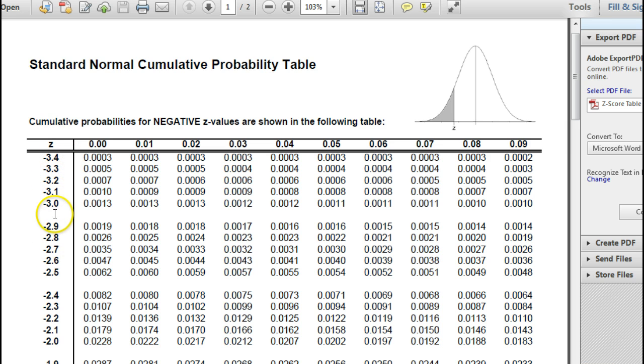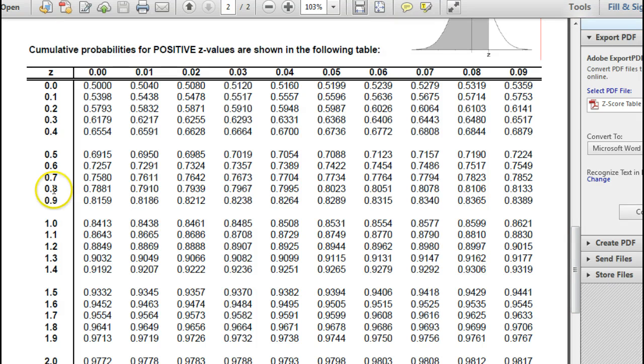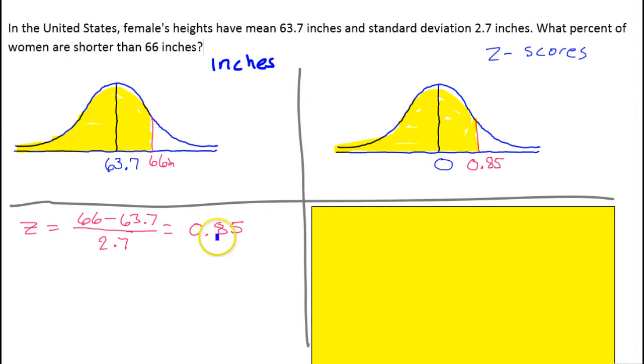Here are the z-scores on the left. We need to find 0.85. We'll start with finding 0.8. Here is 0.8 right here. Now, these numbers will represent the other decimal point. This would be 0.80, 0.81, 0.82, 3, 4, etc. We wanted 0.85, so that means we want this column right here.